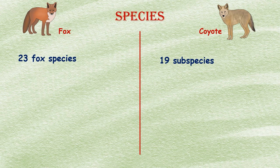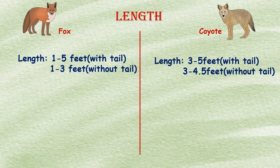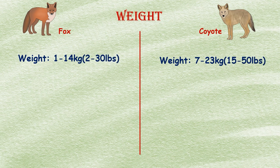A regular fox has a length of about one to five feet with the tail included; if the tail is excluded, the size of the fox's body is only one to three feet. Coyotes are longer than the fox and are three to four and a half feet long, and when including the tail the total length ranges between three to five feet.